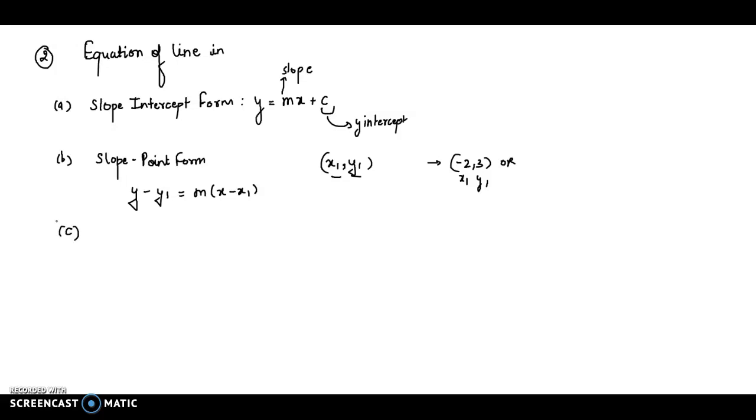Part C is two-point form. In this case, the equation is (y - y₁)/(x - x₁) = (y₂ - y₁)/(x₂ - x₁), where x₁, y₁ and x₂, y₂ are the two points through which the line passes.